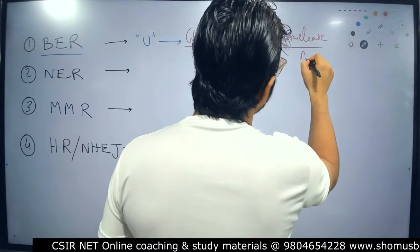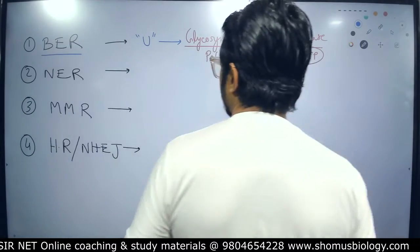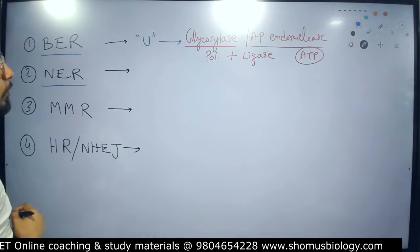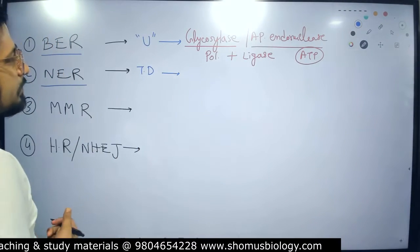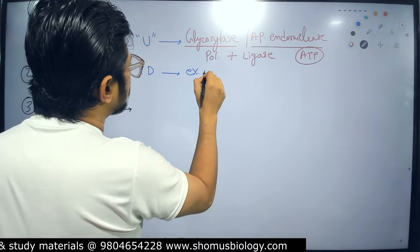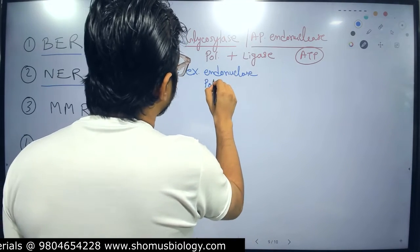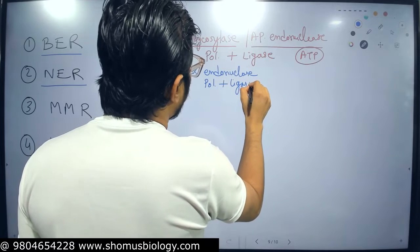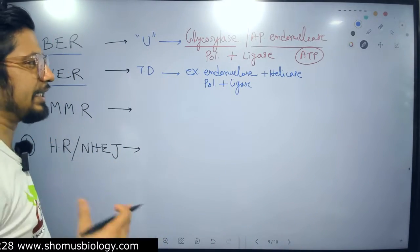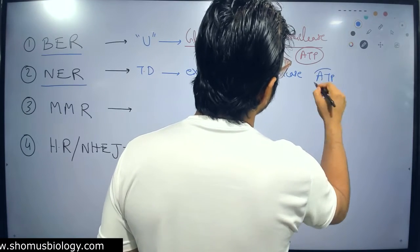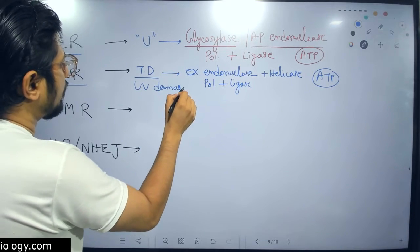This process requires ATP — in fact, all DNA repair mechanisms utilize ATP. For Nucleotide Excision Repair, which repairs thymine dimers caused by UV damage, the enzymes involved are excision endonuclease, helicase, DNA polymerase, and ligase. These are the hallmark enzymes of Nucleotide Excision Repair.